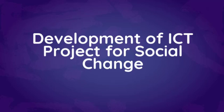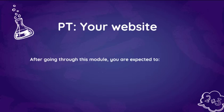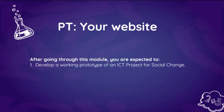We have been talking about this project since Module 2. Supposedly, you have already submitted your advocacy plan, and you have already started building a website for that advocacy plan. In this module, we are going to talk about the different phases included in the development of the ICT project. The performance task for this module is your website — you should have already built it. After going through this module, you are expected to develop a working prototype of an ICT project for social change.